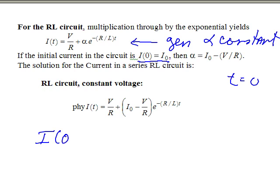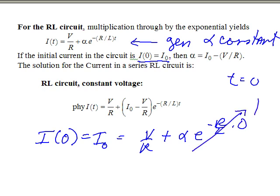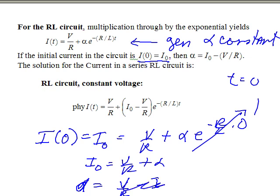Evaluating the RL current equation at T equals zero: I(0) equals I-naught equals V over R plus alpha times E to the zero, which equals 1. So I-naught equals V over R plus alpha, giving alpha equals I-naught minus V over R. The current in the RL circuit equals V over R plus (I-naught minus V over R) times E to the minus R over L times T — the decaying exponential.